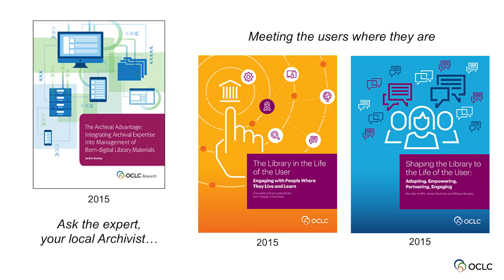We have two reports in our user studies area, and Lynn is actually going to be talking about this. The first — the goldenrod cover — is a compilation of previously published material represented in chronological order from various scholarly articles published elsewhere. The blue one is a distillation of content from a meeting held in October in Chicago, where the OCLC Research Library Partnership got together with experts in ethnology and design to talk about the experience library users have outside of the library domain and how it can inform what we do inside.